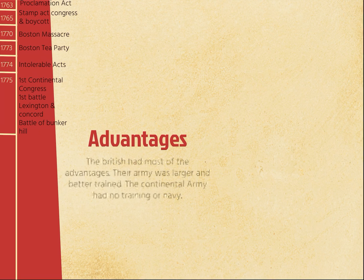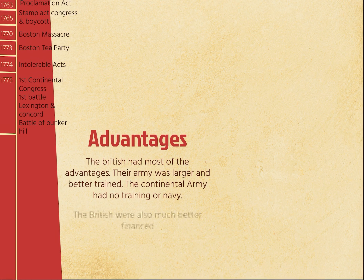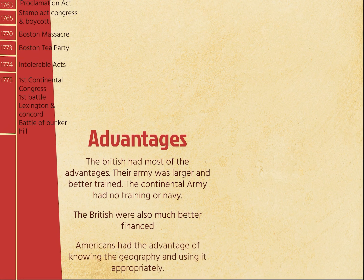The British had most of the advantages. They had a big army, were better trained, and better financed. The Americans, or the Continental Army, had no training, but they had better use of geography. They knew the geography, just like at Lexington and Concord — they hid in trees and ambushed from hills so the British couldn't see them. They were very good about doing this.